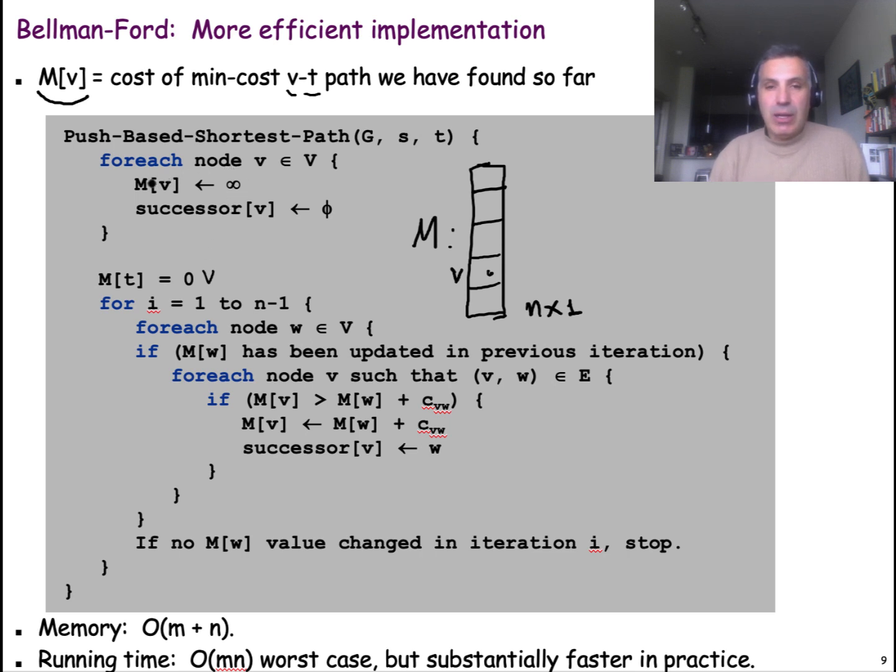So, initially, we, of course, set these costs to be infinite, except from the target where the cost is zero. Then we go through an iteration again, as in the previous algorithm, considering all the values of I from 1 to n-1.